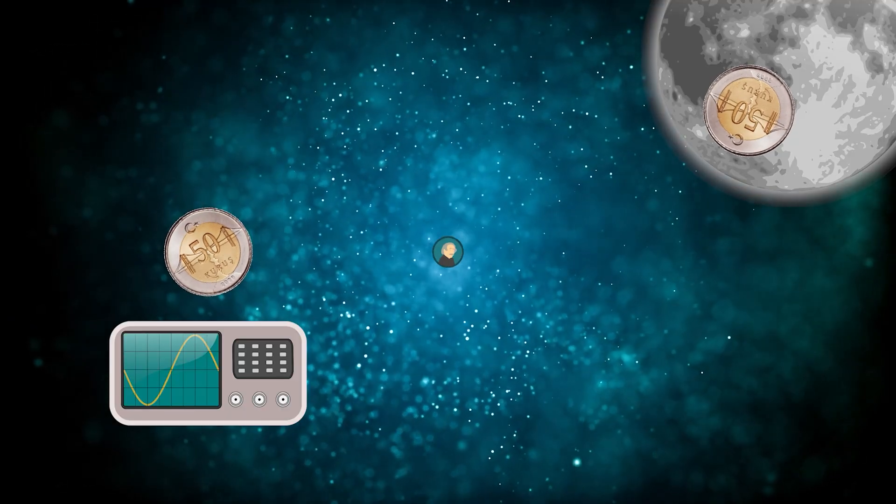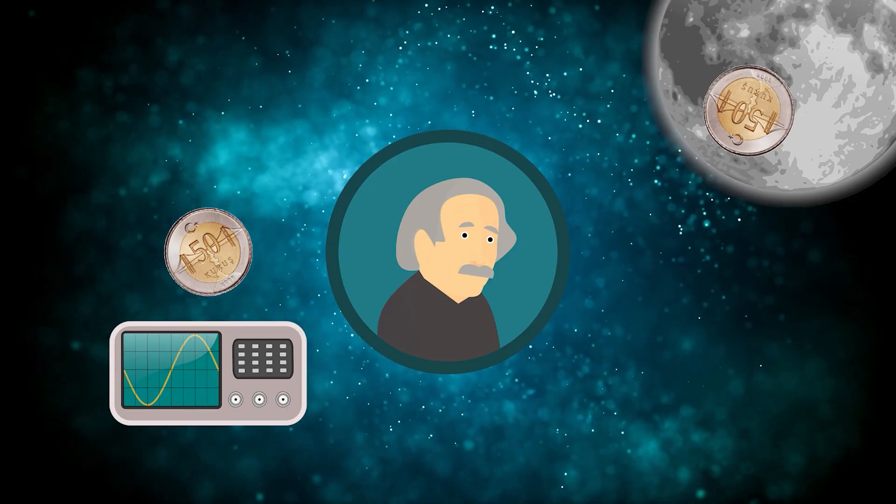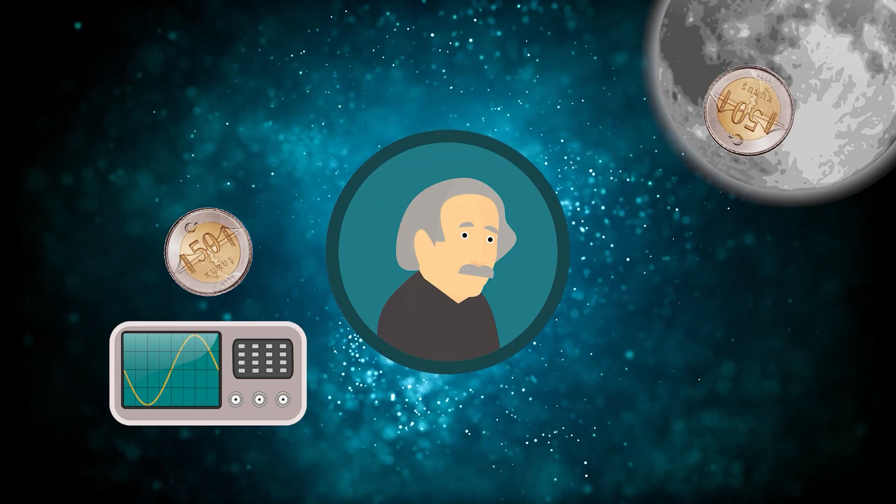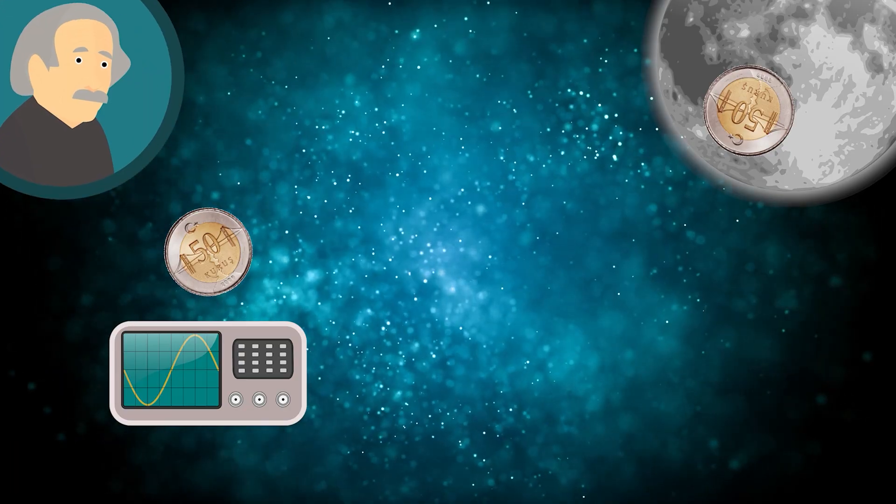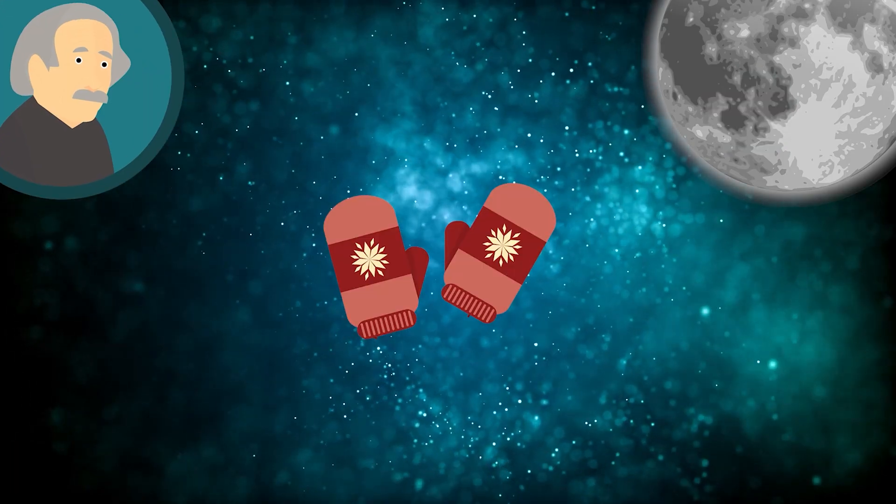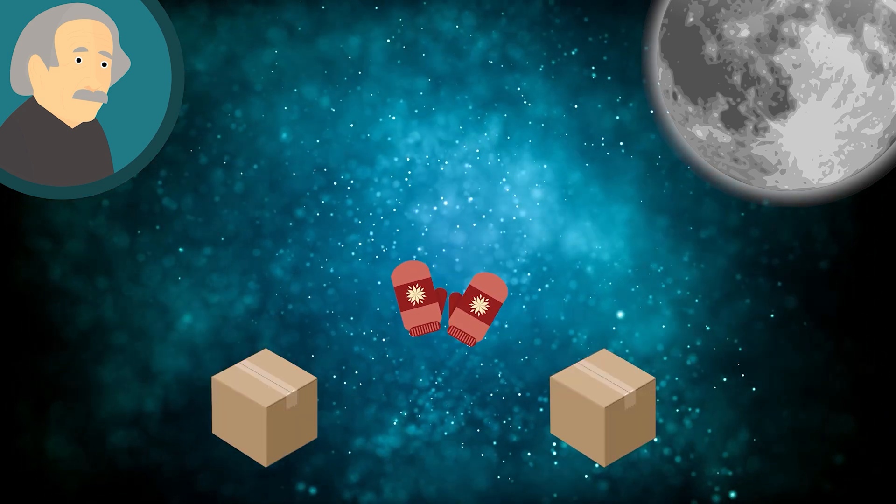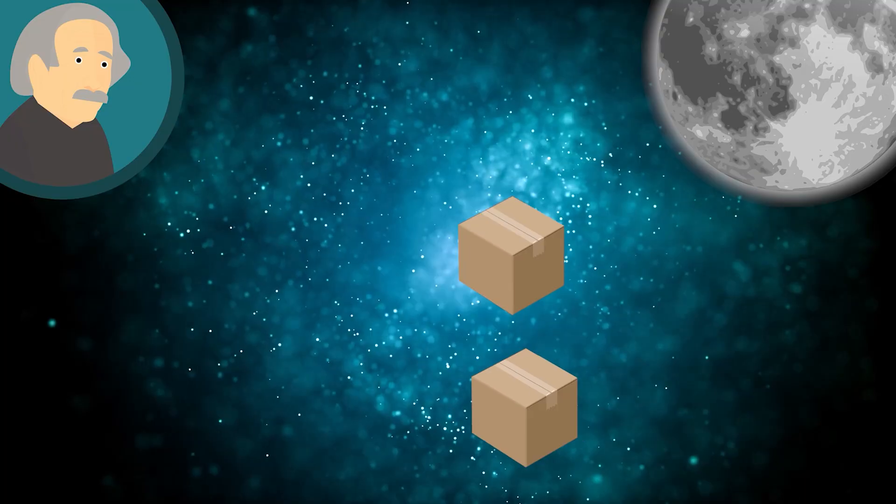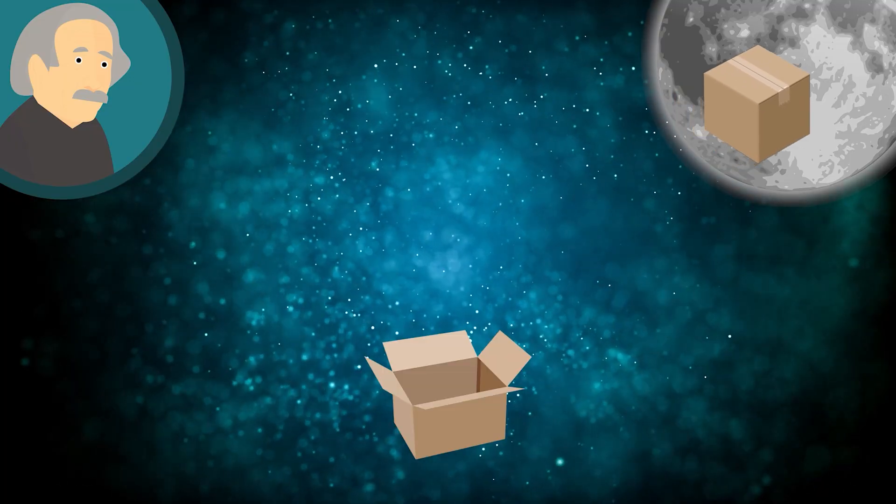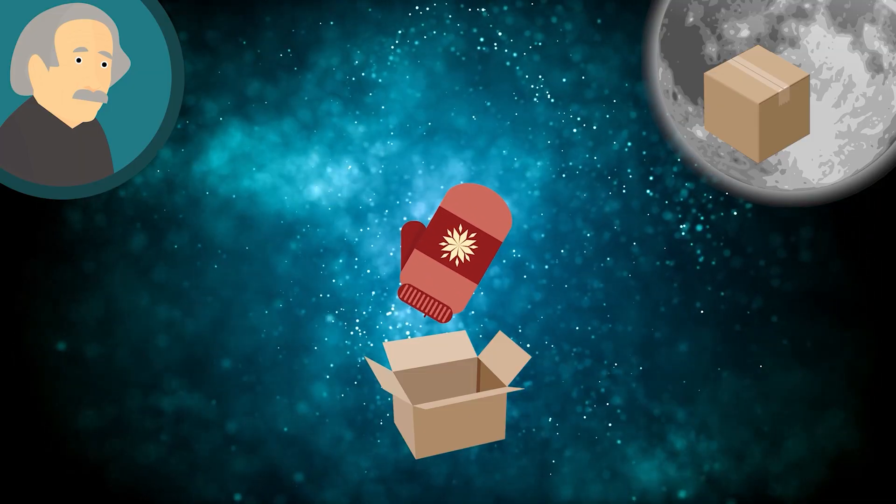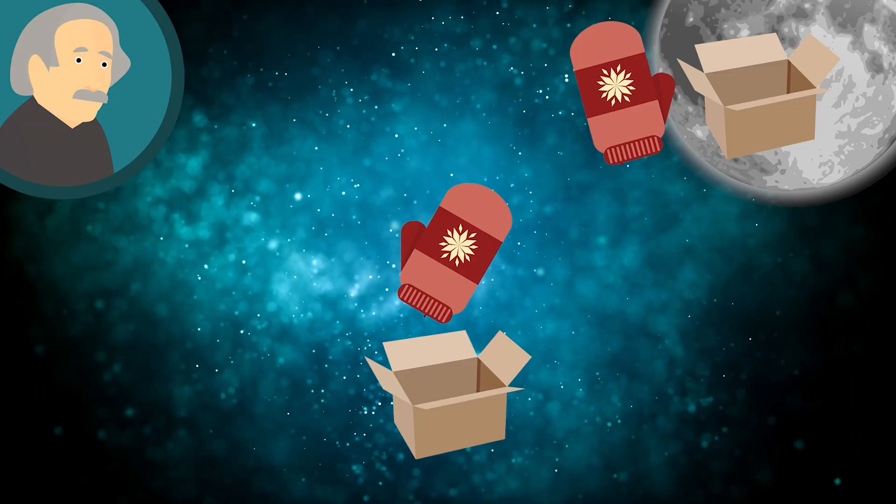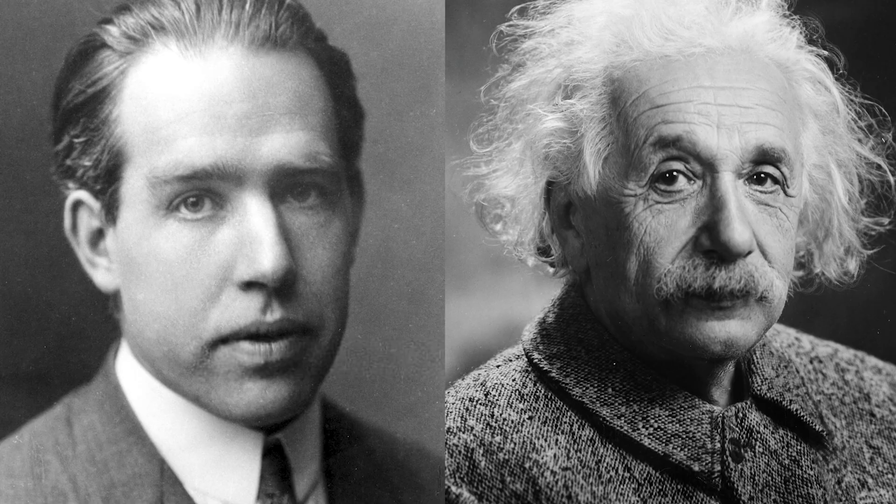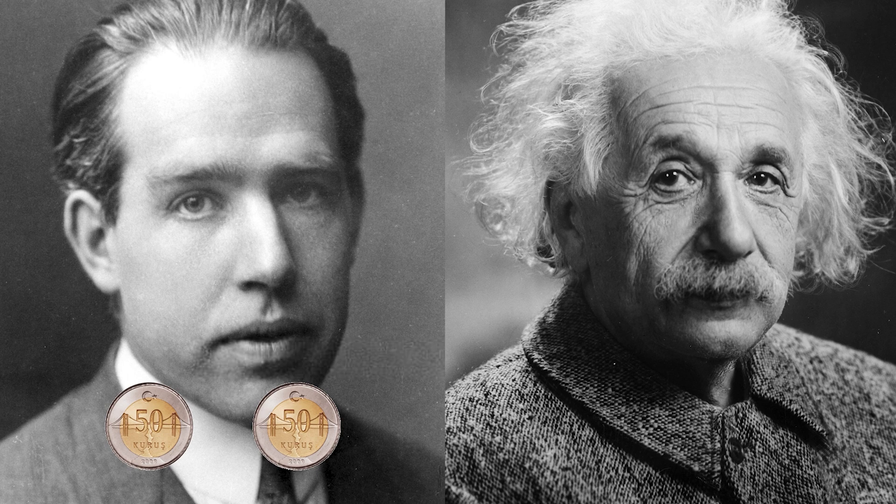According to Einstein, this event was complete nonsense. He did not think it was possible for particles to connect at such a distance. Moreover, even if there was a connection between them, it could not happen faster than the speed of light. Einstein wanted to look at the event from a different perspective. Now think of electrons as pairs of gloves, and after making the gloves interact with each other, we put one in a box and the other in another box. Then we send one of them to the moon again. Now when we open the box on Earth, if we see the right glove, we know immediately that the one on the moon is the left glove. But there's nothing mysterious about it. Everything is already determined before we take the measurement, before we open the box. So who is right?